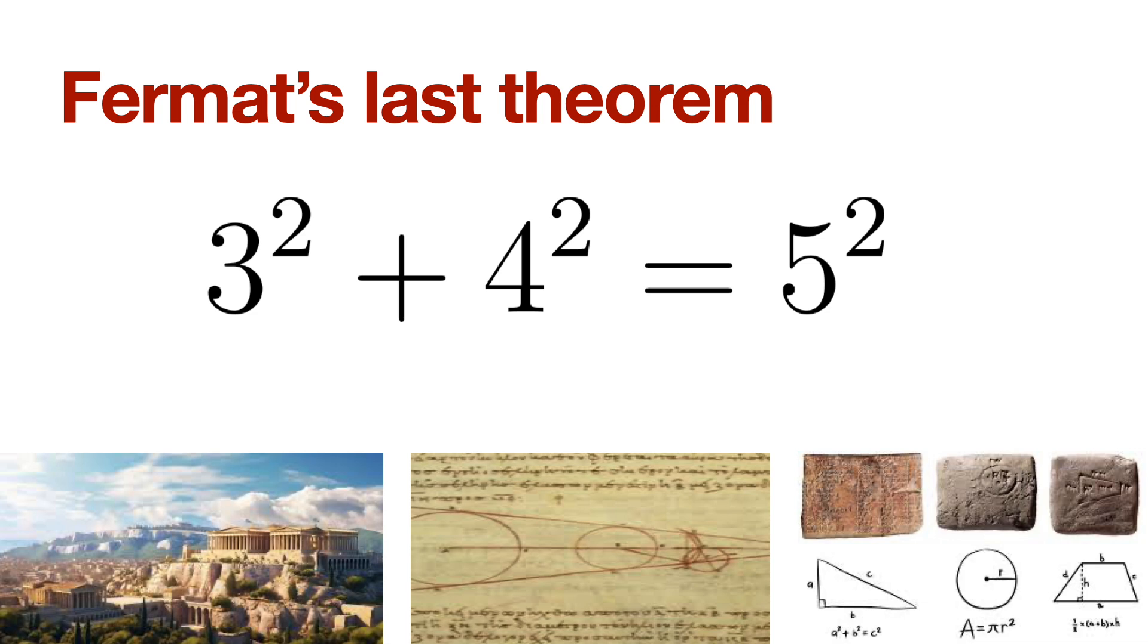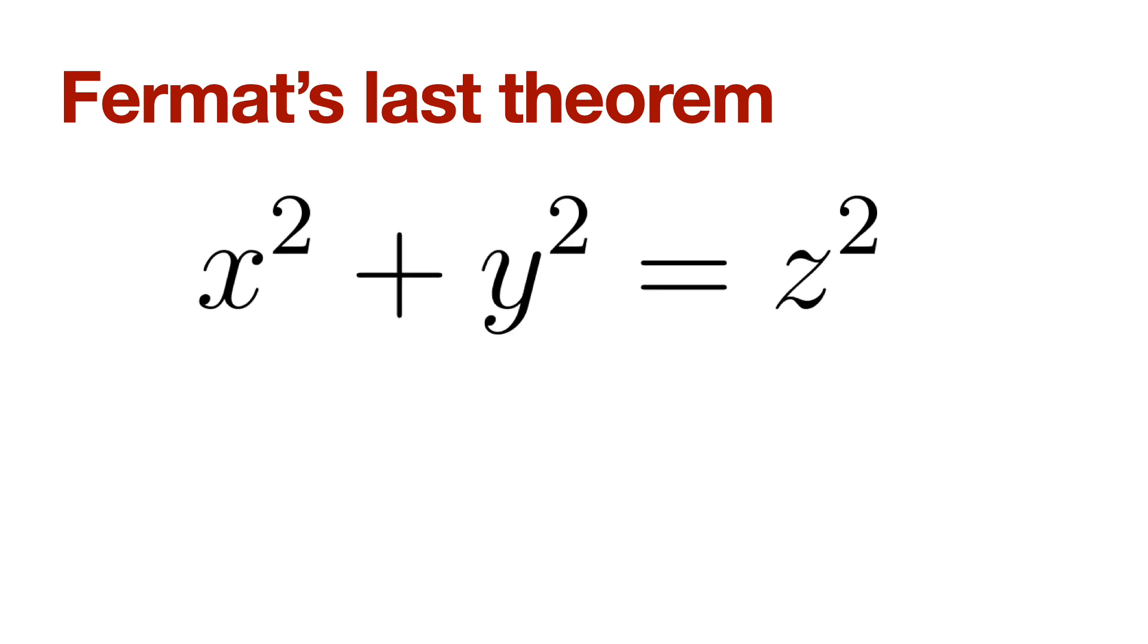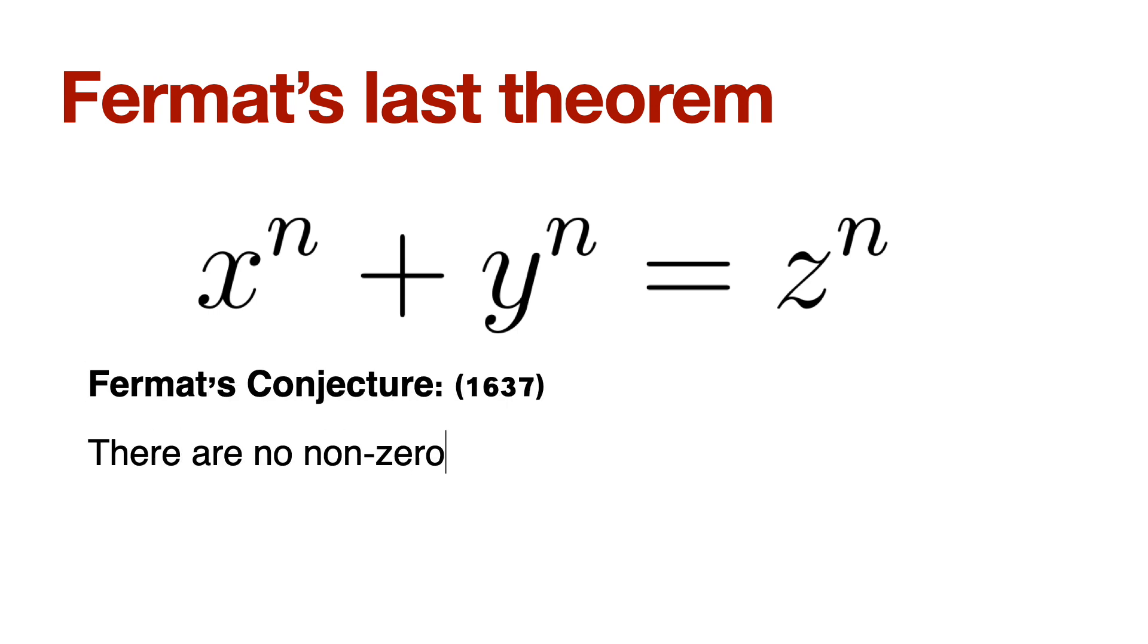All civilizations of the past knew that sum of two squares can be written as a third natural number square. So for example, three square plus four square is five square, five square plus 12 square is 13 square and so on. So we knew long ago that you can write a square number as sum of two other square numbers. Fermat wondered whether the same thing is true for higher powers.